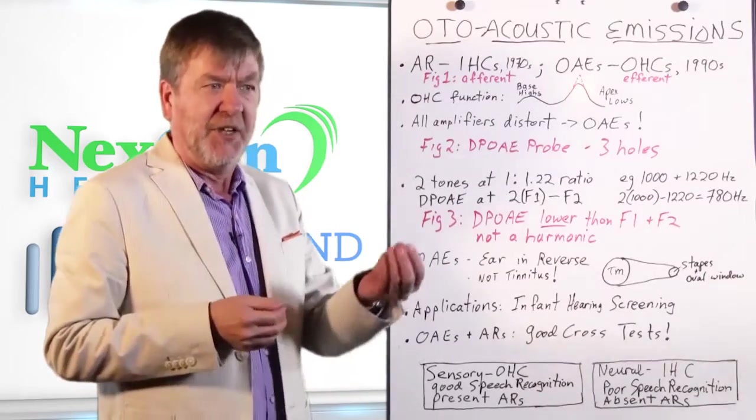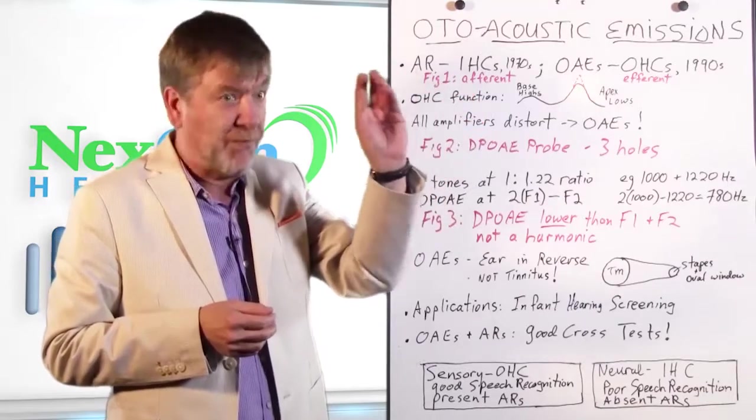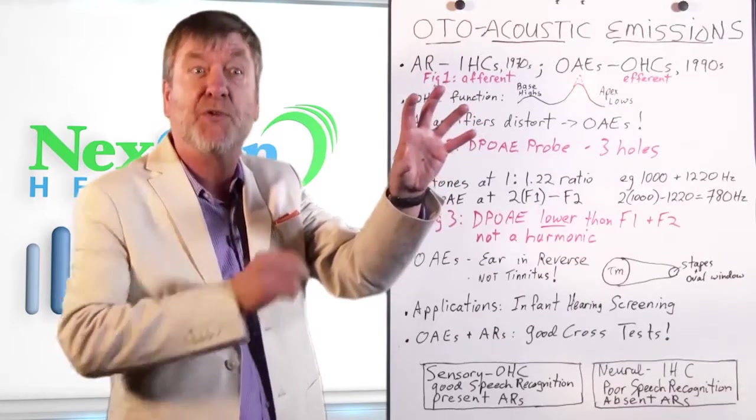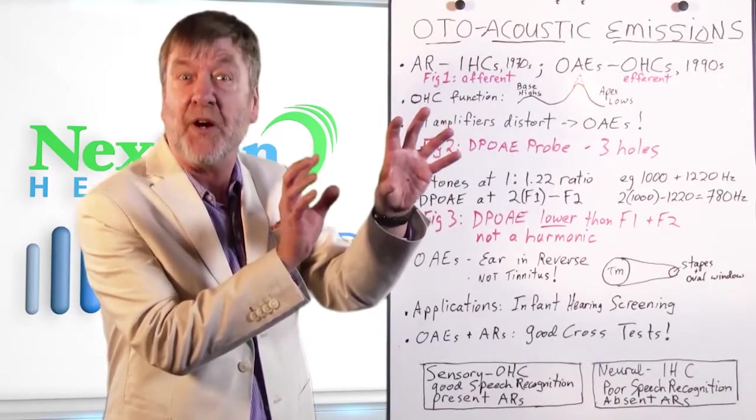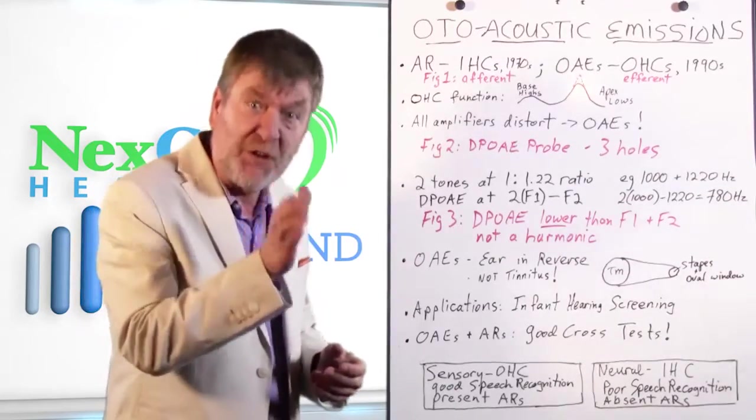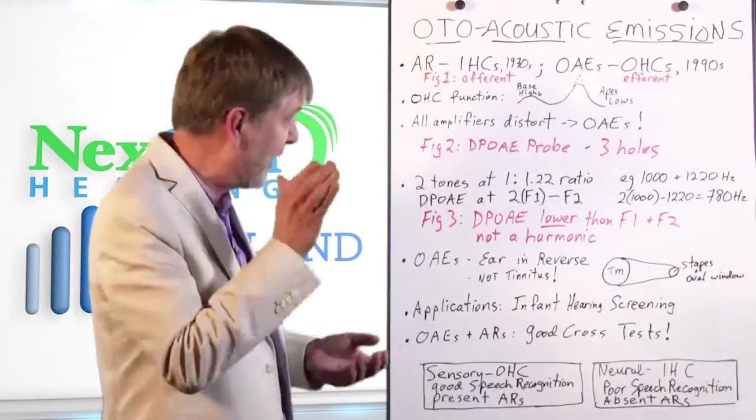Sometimes they're called distortion product otoacoustic emissions. They are the by-product of the outer hair cells working their tails off. You can think of it like you can have a light bulb which passes off a lot of light, but it also emits a bit of heat as a by-product. Well, otoacoustic emissions are like that, a by-product.